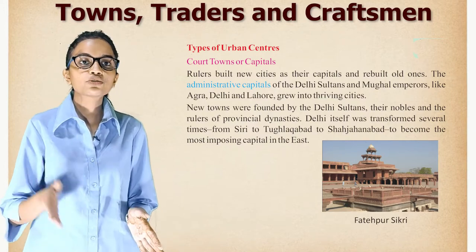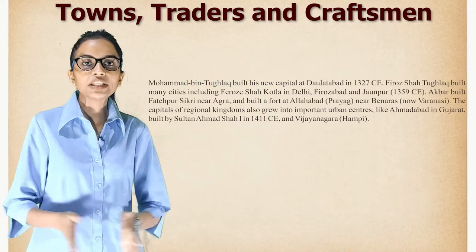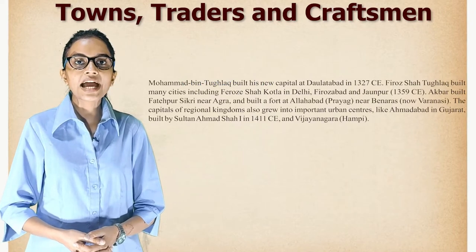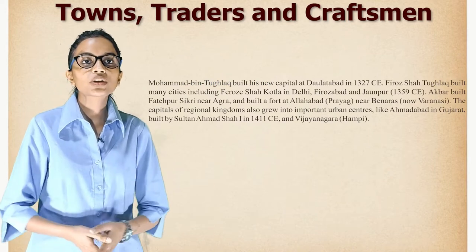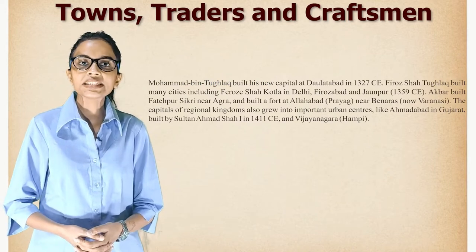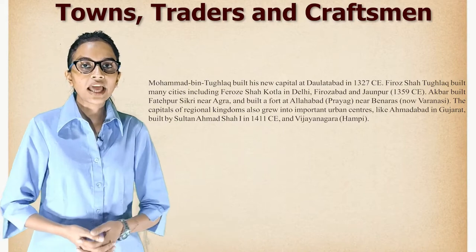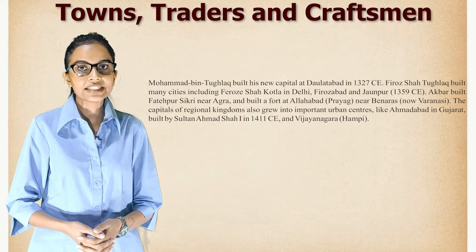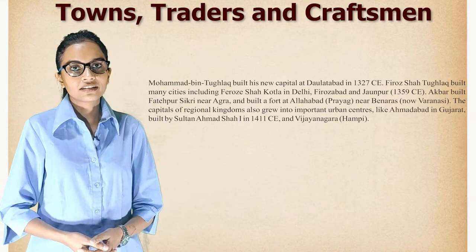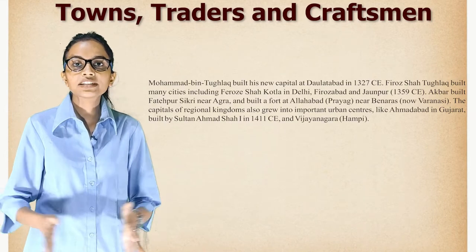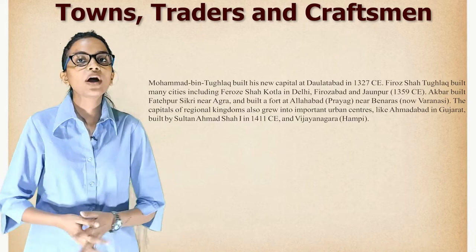Muhammad bin Tughlaq built his new capital at Daulatabad in 1327 CE. Firoz Shah Tughlaq built many cities including Firozabad in Delhi, Ferozabad, and Jaunpur in 1359 CE. Akbar built Fatehpur Sikri near Agra and built a fort at Allahabad (Prayag), near Banaras, now Varanasi.